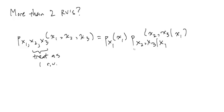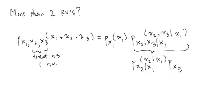Then we see that we can just use the product rule again on the second factor, where it would become P(X2|X1)(little x2 | little x1) times P(X3 | X1, X2). Hopefully you see a general pattern: we first introduce random variable X1, then we introduce X2 conditioned on everything introduced so far (which is only X1), and then when we introduce X3 we condition on everything introduced so far, which would be X1 and X2.